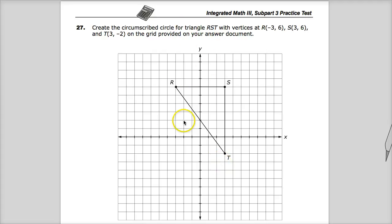For triangle RST with vertices at negative 3, 6; 3, 6; and 3, negative 2. At least they put the triangle in for you. So in order to do that, it's not super difficult to do depending on the tool that you have to use.